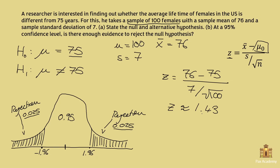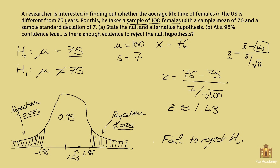As you can see, 1.43 falls outside the rejection region, which means that we fail to reject H0. In other words, the average lifetime of females isn't different from 75 — it's actually 75.